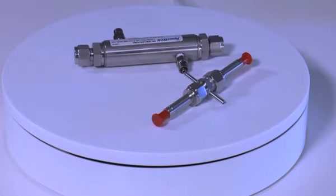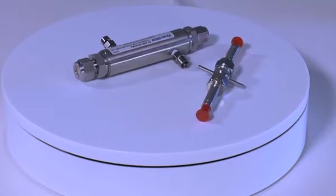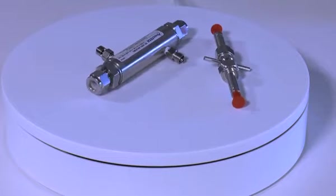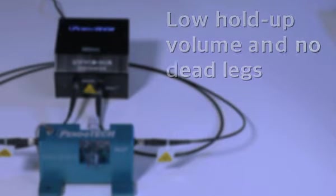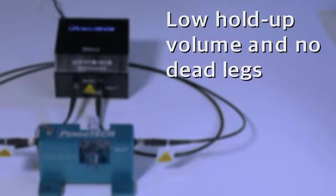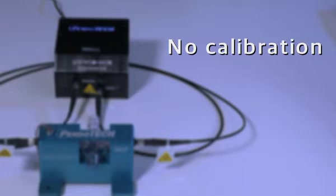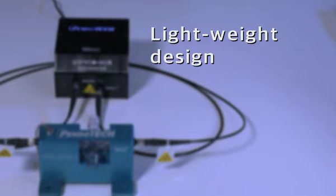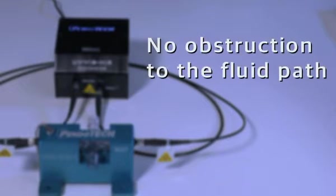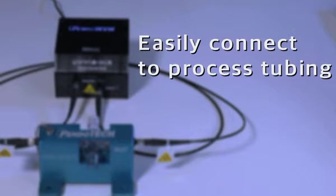These include specially designed low hold-up flow cells for research where working volumes and flow rates are low. Only Pendotech can boast of design benefits such as low hold-up volume and no dead legs, no calibration requirements, complete process containment, and from an ergonomic perspective, lightweight design. No obstruction to the fluid path, and they easily connect to process tubing.